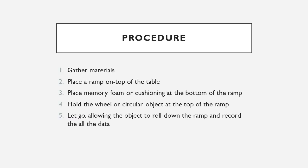Procedure: We need to gather materials, place the ramp on top of the table, place memory foam or cushioning at the bottom of the ramp, hold the wheel or circular object at the top of the ramp, let it go, allowing the object to roll down the ramp and record all the data.